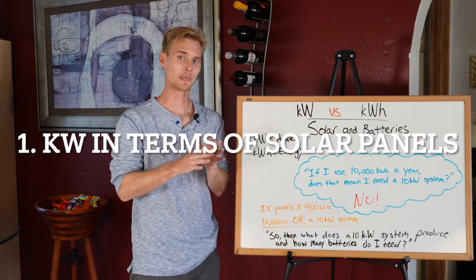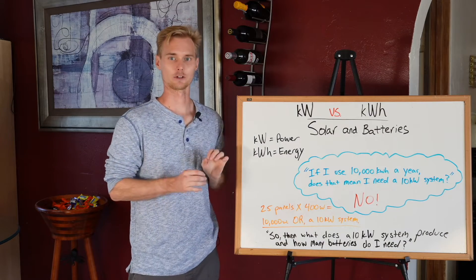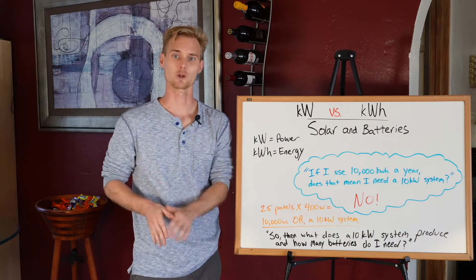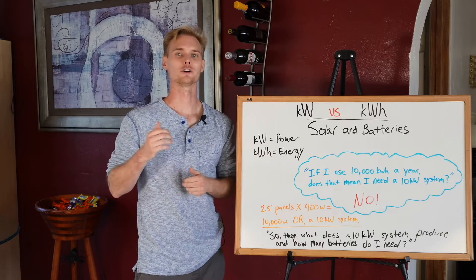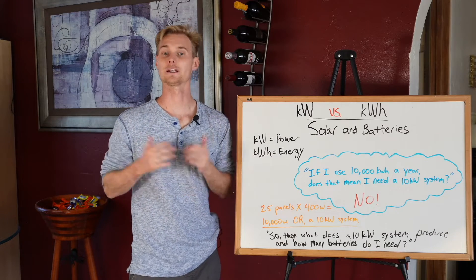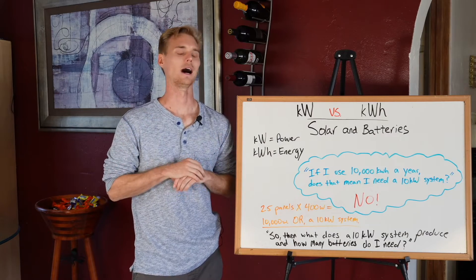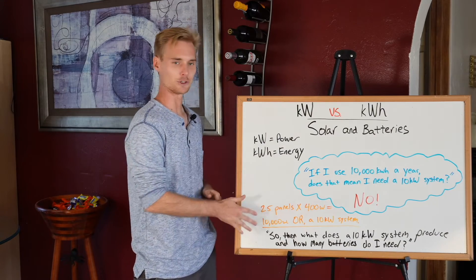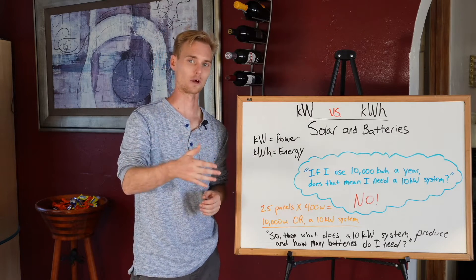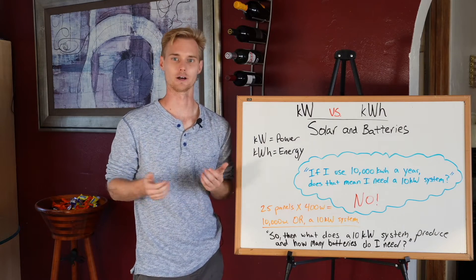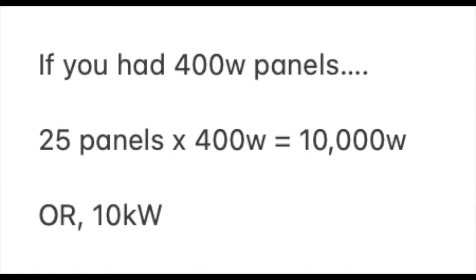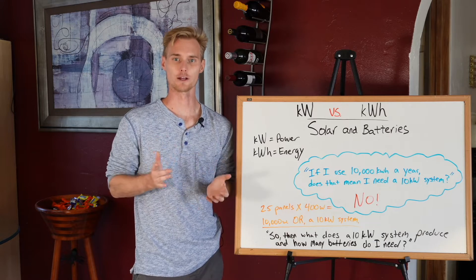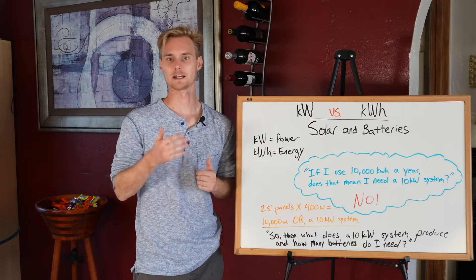Let's talk about solar and learn how to calculate what the system size is in terms of kilowatts. Let's say a solar consultant says you need a 10 kilowatt system. How you calculate that is you take the watt rating of each panel — let's say 400 watts — and multiply by the number of panels. So 25 panels times 400 watts is 10,000 watts, or 10 kilowatts.